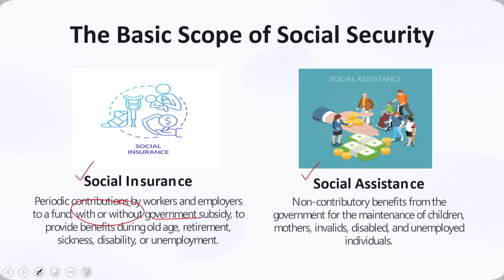When you look into social assistance, it is a non-contributory benefit from the government for the maintenance of children, mothers, invalids, disabled, and unemployed individuals specifically. It could be a grant or help from the authorities. With social insurance, there is equal or significant contribution from the employer or government — as in the case of ESI or similar measures which governments generally adopt.